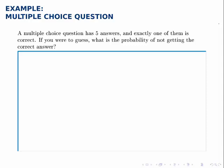A multiple choice question has five answers and exactly one of them is correct. If you were to guess randomly, what's the probability of not getting the correct answer?